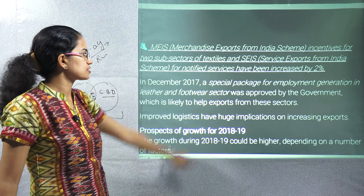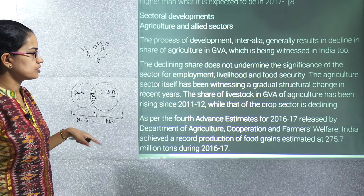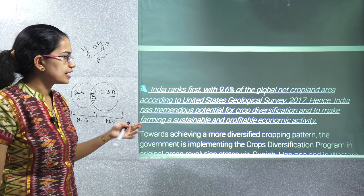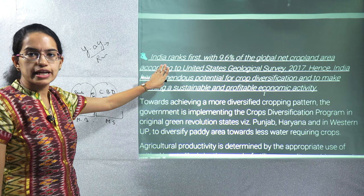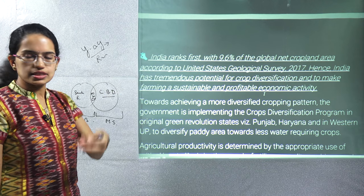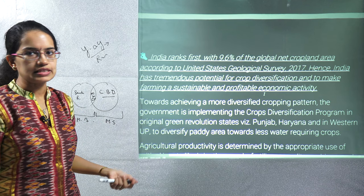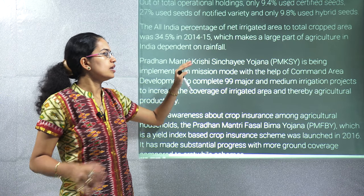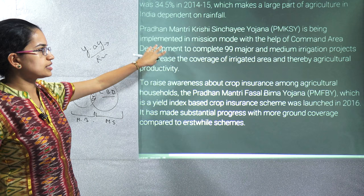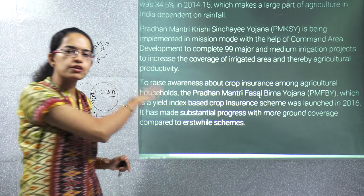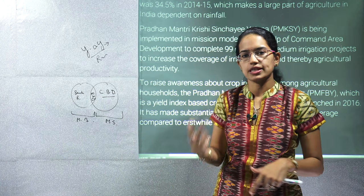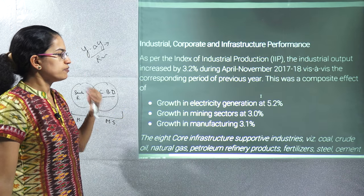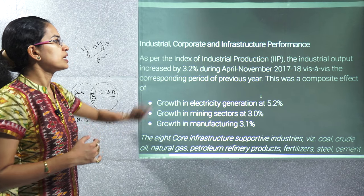In agriculture, India ranks first with 9.6% of the net cropland area as per the USGS — United States Geological Survey. We have been working on various schemes like PM Fasal Bima Yojana and Krishi Sinchayee Yojana. All these schemes will be covered separately in dedicated lectures, so we will just highlight the various schemes here to avoid repetition.